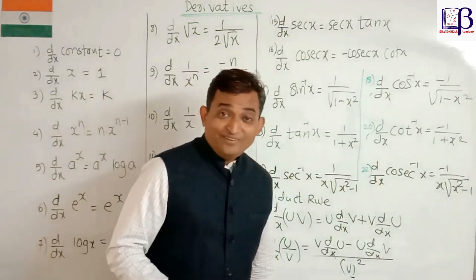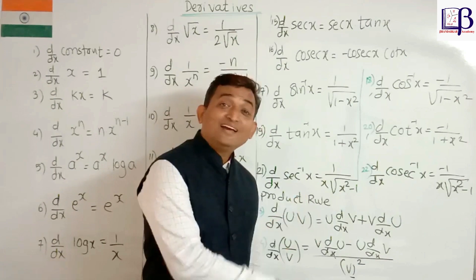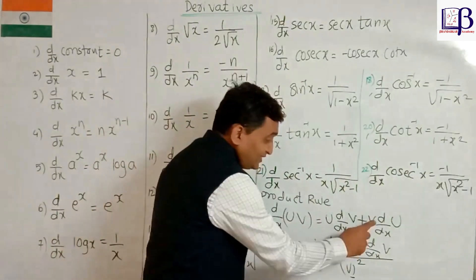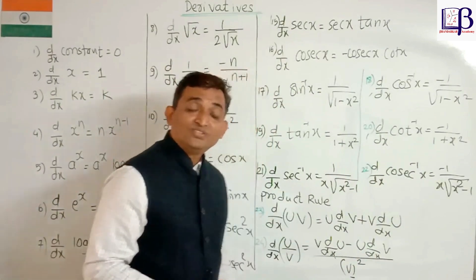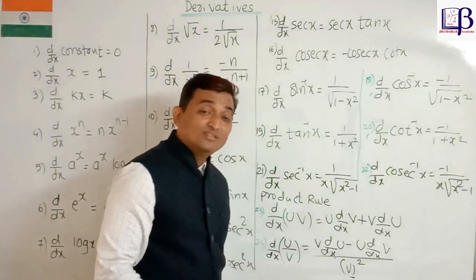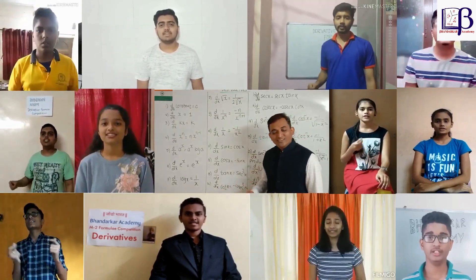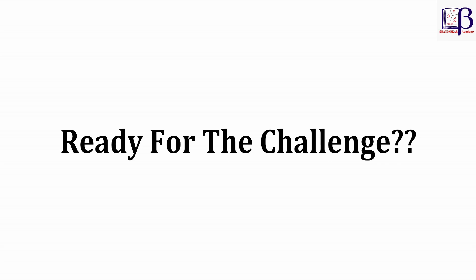Product rule: d by dx of u dot v is equal to first function as it is, derivative of second function, plus second function as it is, derivative of first function. Quotient rule: d by dx of u upon v is equal to denominator as it is, times derivative of numerator, minus numerator as it is, times derivative of denominator, all upon denominator squared.